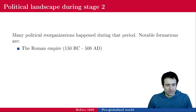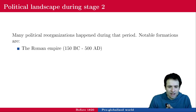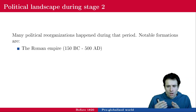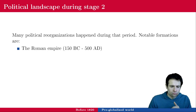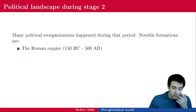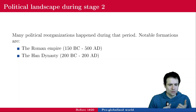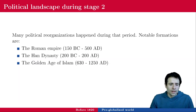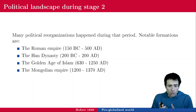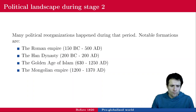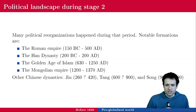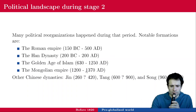Politically, notable formations include the Roman Empire, which took over a big piece of Europe; the Han Dynasty in China; the Golden Age of Islam until around 1250; the Mongolian Empire, which was huge; and other Chinese dynasties. Those are not dates to remember in detail — just get the rough outline.